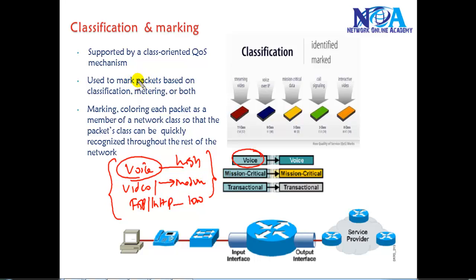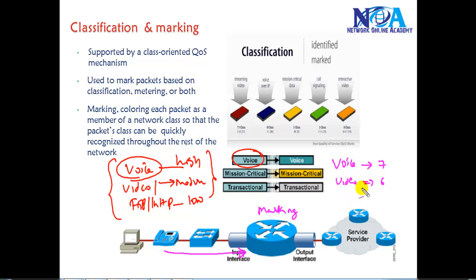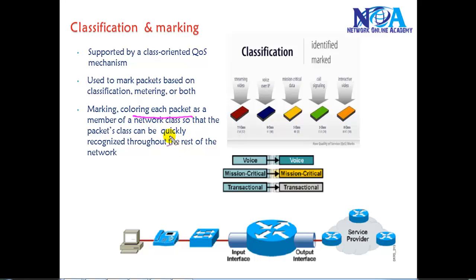After classification, as traffic moves over the network we can apply specific marking values. For example, all voice traffic could be marked with a value of seven, and video traffic could be marked with a value of six. As packets reach the next device, the marking values determine what kind of priority is given to that traffic. Marking is like coloring packets as members of a specific network class, and it will be recognized throughout the network. Classification differentiates traffic types like video, voice, mission-critical data, or signaling traffic.